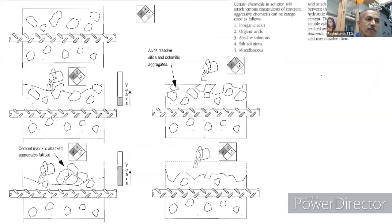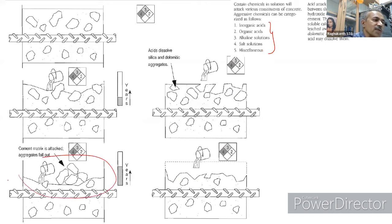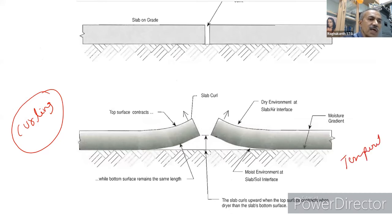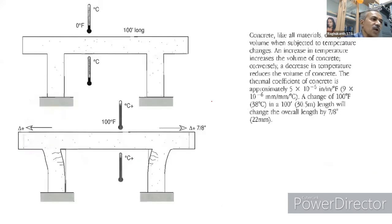Apart from chloride and carbonation, inorganic acids, alkaline solutions, and salt solutions found in chemical plants, paper mills, and hospital labs can damage the cement matrix and aggregates. Curling — observed in Odisha — occurs when there is a temperature gradient and moisture difference across a slab. The coefficient of thermal expansion of concrete is approximately 5×10⁻⁶; a 100°F temperature change can change overall length by about 0.78 inches per 100 feet.